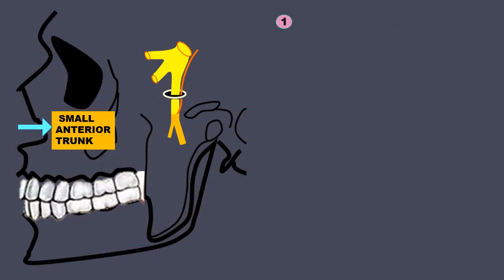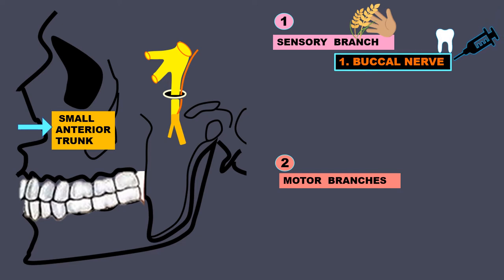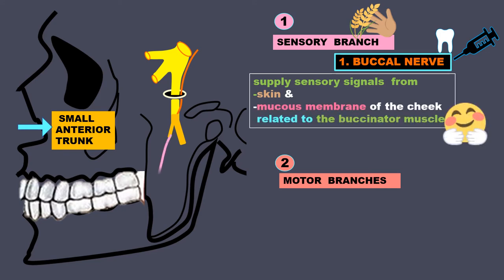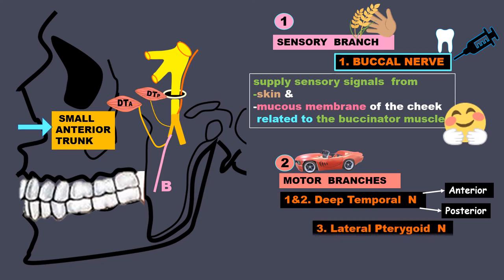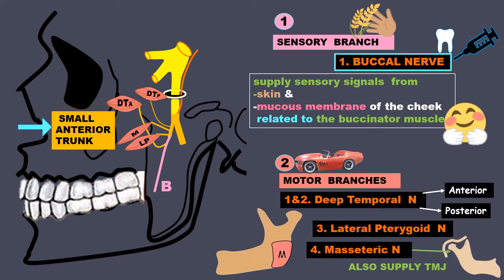The small anterior trunk gives rise to two types of branches: one sensory and two motor. The sensory branch is the buccal nerve, which is anesthetized during tooth extraction and minor surgical procedures. It supplies sensory signals from the skin and mucous membrane of the cheek related to the buccinator muscle. The motor branches include the two deep temporal nerves — anterior and posterior — the lateral pterygoid nerve supplying the lateral pterygoid muscle, and the masseteric nerve supplying the masseter muscle. The masseteric nerve also supplies the temporomandibular joint.